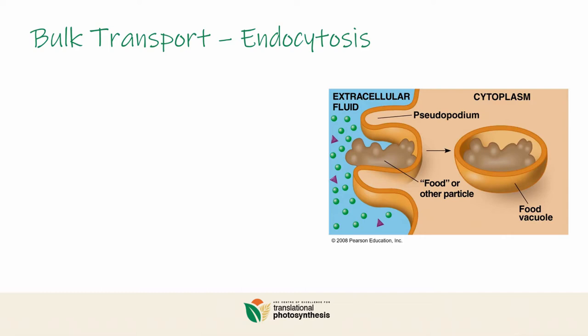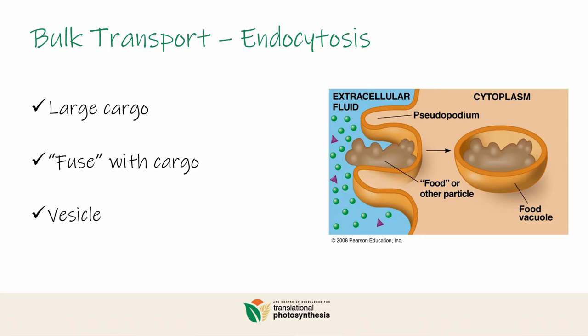Endocytosis is the process of taking large things in, and to do so, the cell will kind of fuse with its cargo. In other words, the cell membrane wraps around a large molecule to internalize or engulf it. As a result, it will create what is called a vesicle or a vacuole.